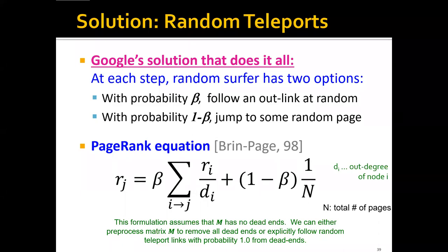Here's Google's solution with random teleports. At each step the random surfer has two options. With probability beta, the random surfer is going to follow an outlink at random, and with probability 1 minus beta, the surfer is going to jump to some random page. So this second option is the teleport option.